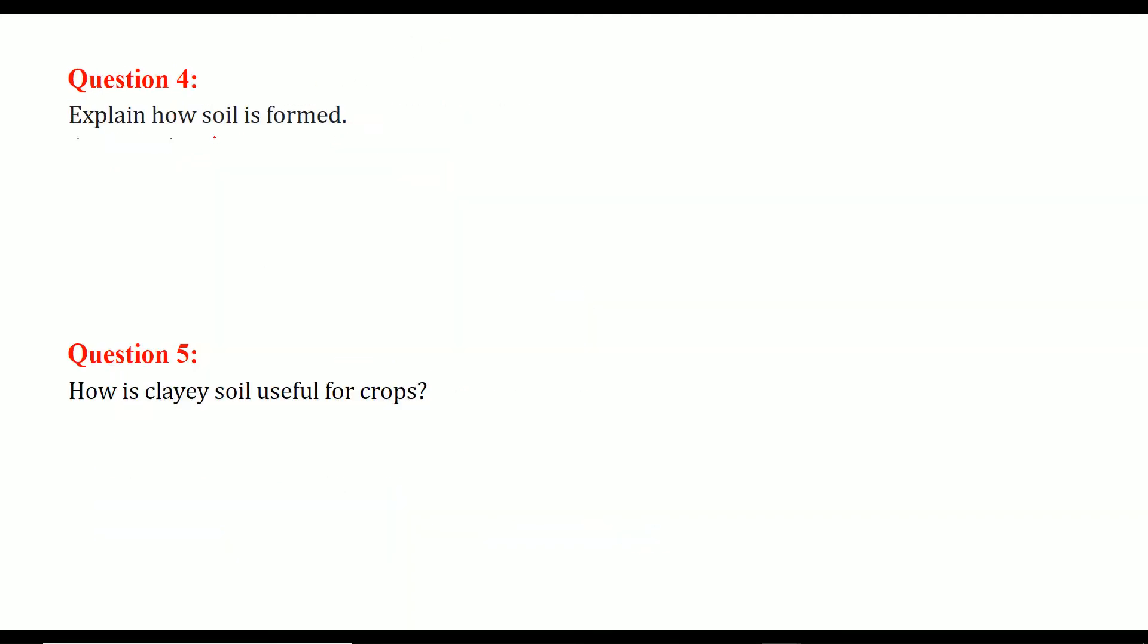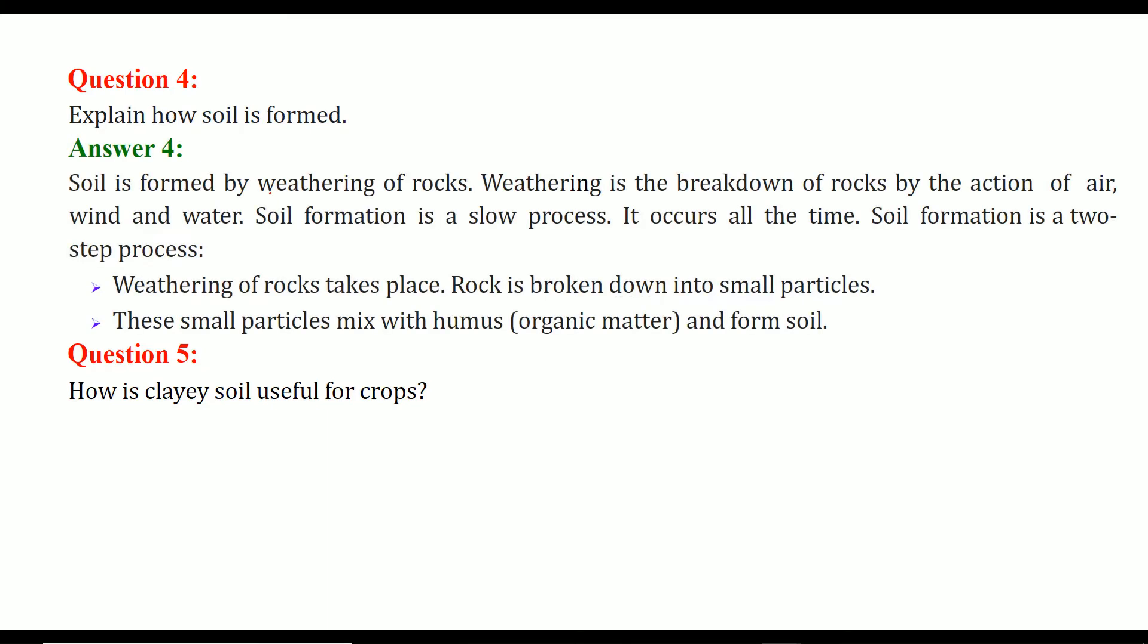Explain how soil is formed. There are rocks and there is a process which is called the weathering of the rock. And this is simply breakdown of the rock by the action of blowing air that is wind and water. So this is a very slow process and it occurs all the time in the environment. And this soil formation is actually two step process.